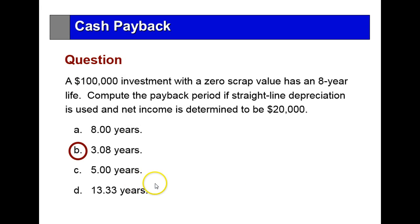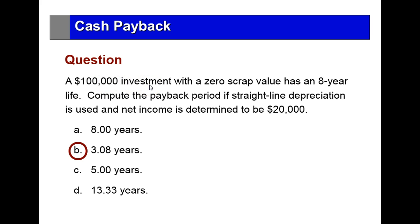Going back to the earlier example: an investment of $100,000 with an eight-year life. $100,000 divided by eight years is about $12,500 depreciation per year. If you take the net income of $20,000 plus $12,500, that's $32,500, and it's going to take about 3.8 years to get the $100,000 back — calculated as $100,000 divided by $32,500. The cash flow is really the $20,000 plus depreciation because depreciation is just an adjusting journal entry; the true cash is greater than $20,000.